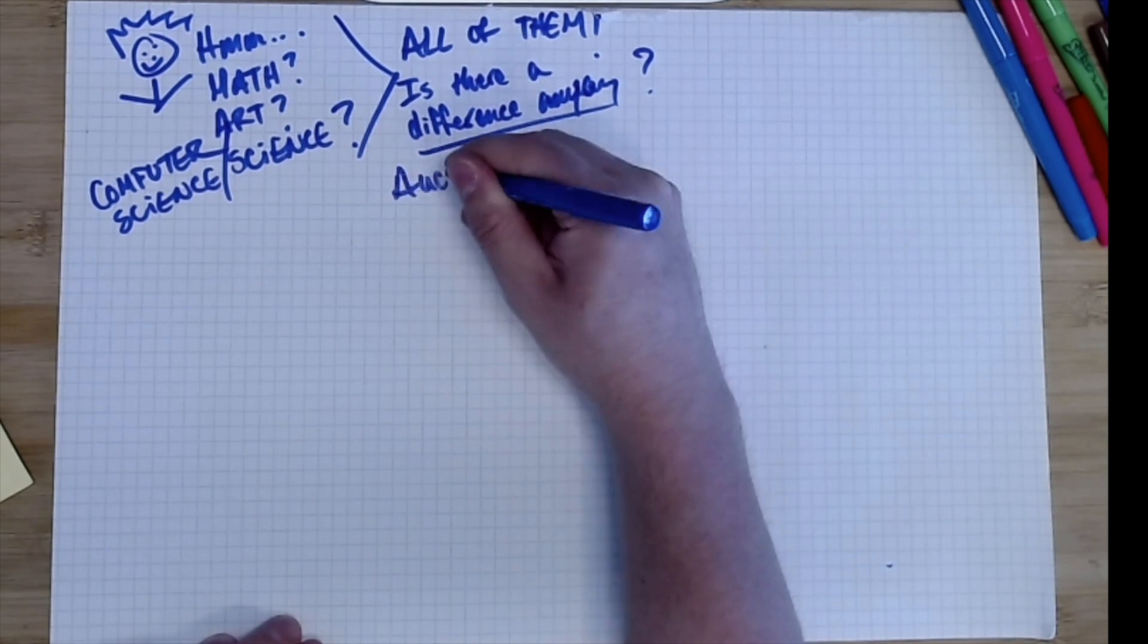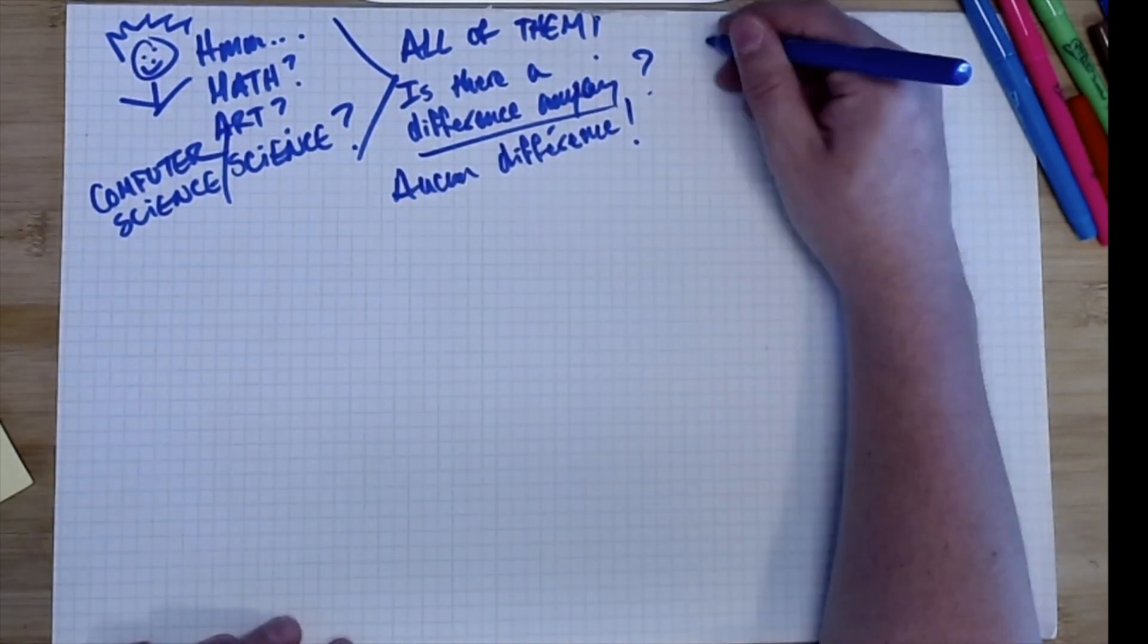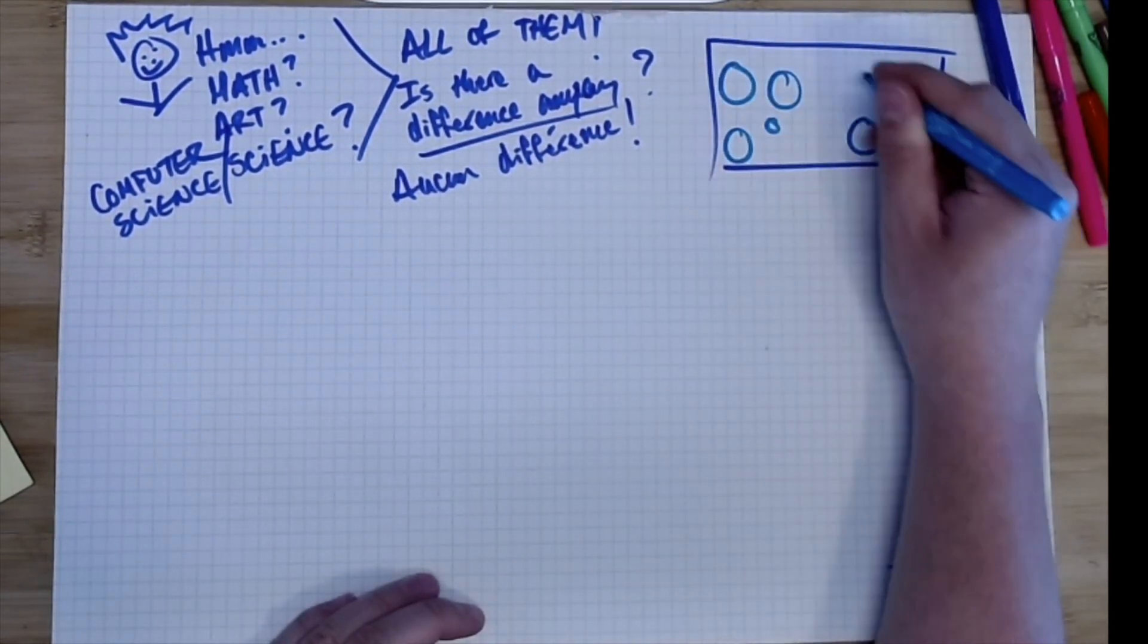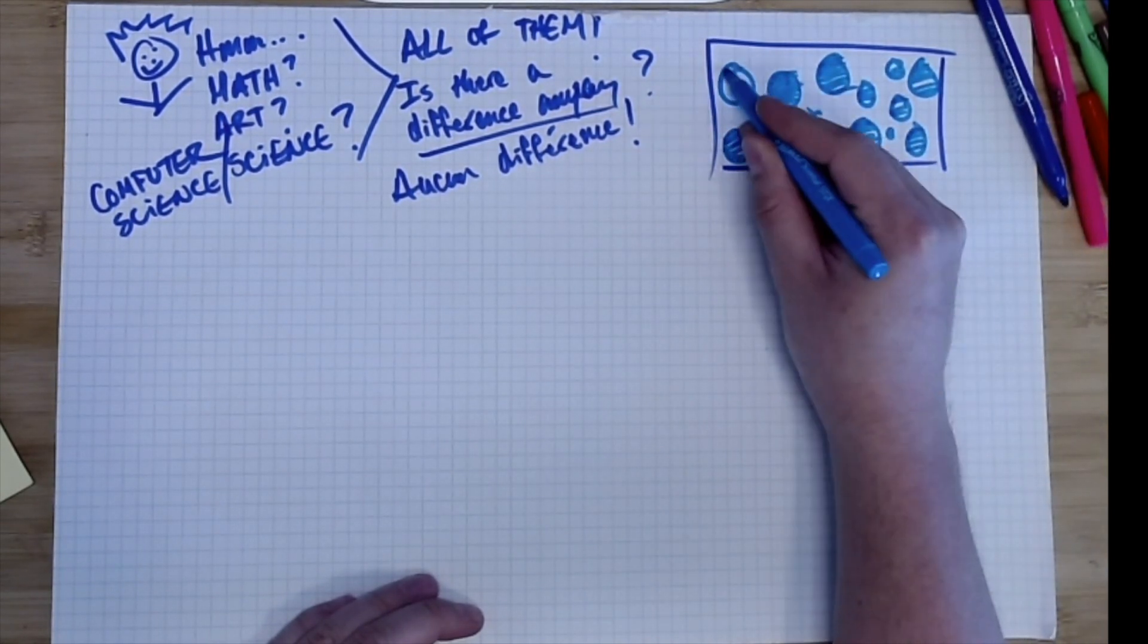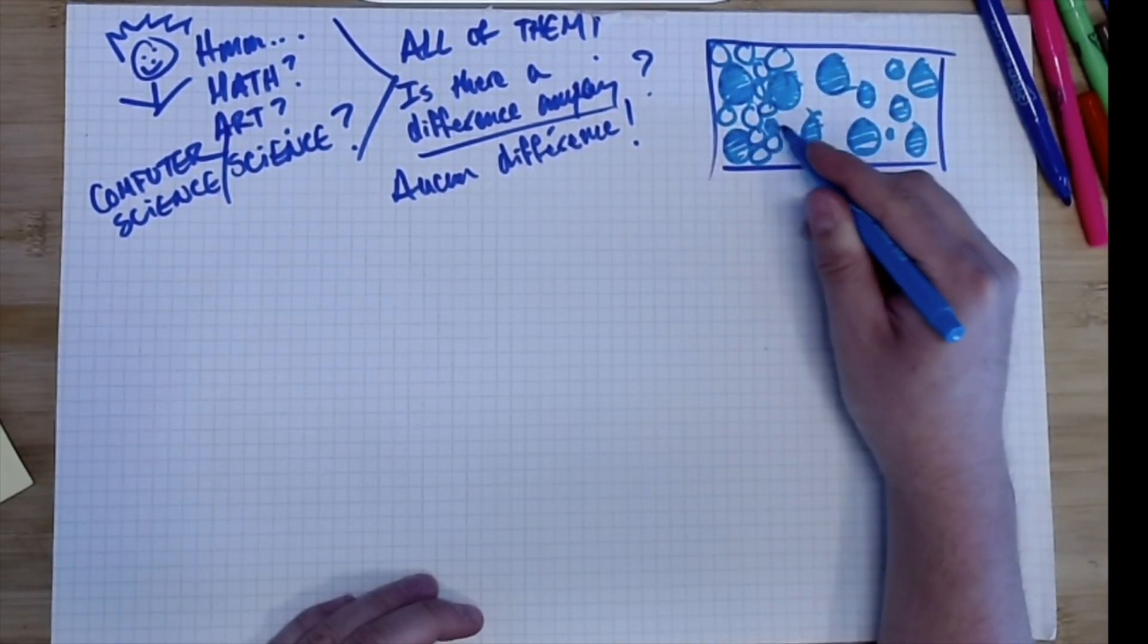First off, you may be considering what I'm drawing here to be art, circles, maybe a little bit of math, but really it's going to blend all kinds of different disciplines together including computer science.